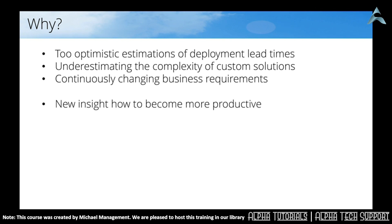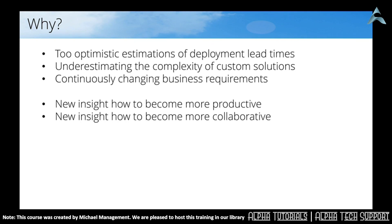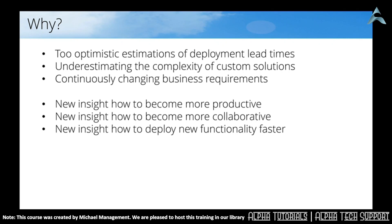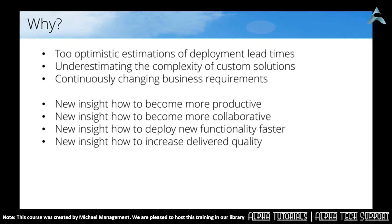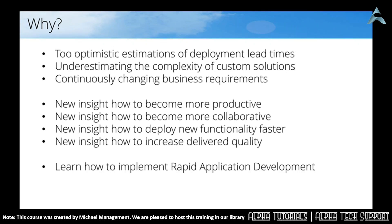It is unrealistic to expect that these three reasons can be eliminated — they will exist. But there is also an opportunity that despite these three reasons, you can become more productive, and at the same time there is the possibility for people to become more collaborative as well. The overall goal is to make sure that we can deploy new functionality much faster than before, and as the cherry on the cake, we also deliver higher quality. You might think this is a mission impossible, but you can achieve these things by applying rapid application development.